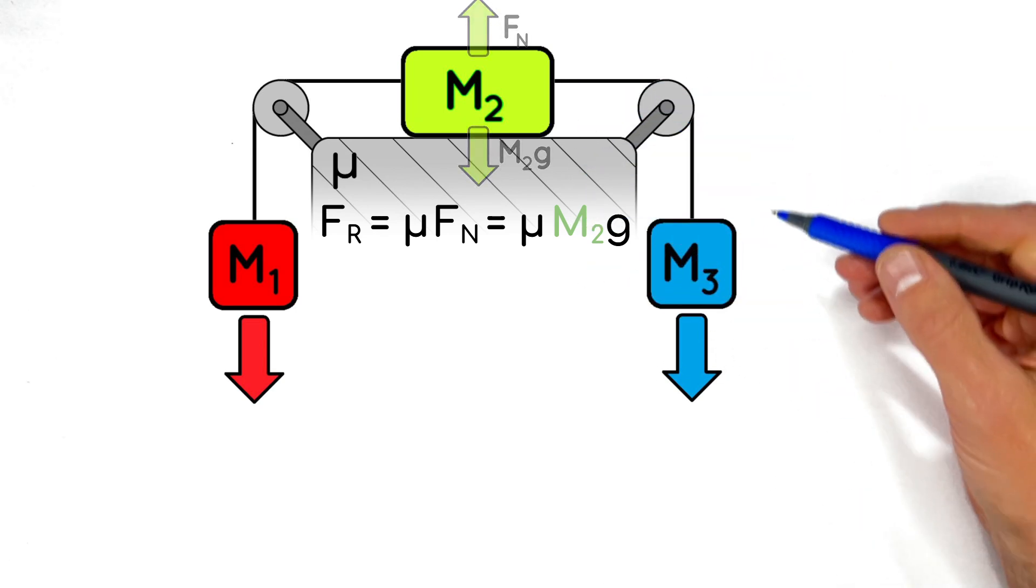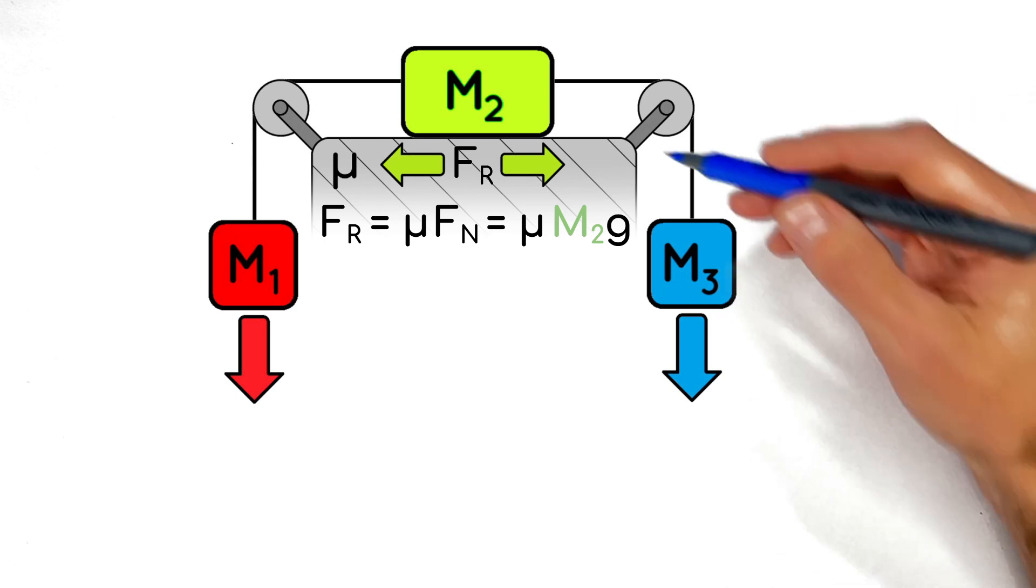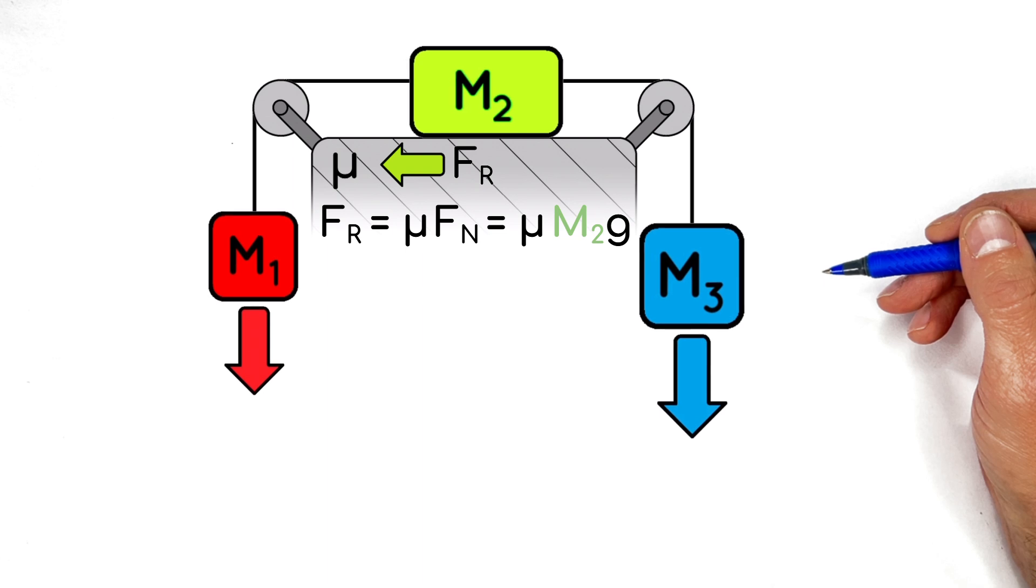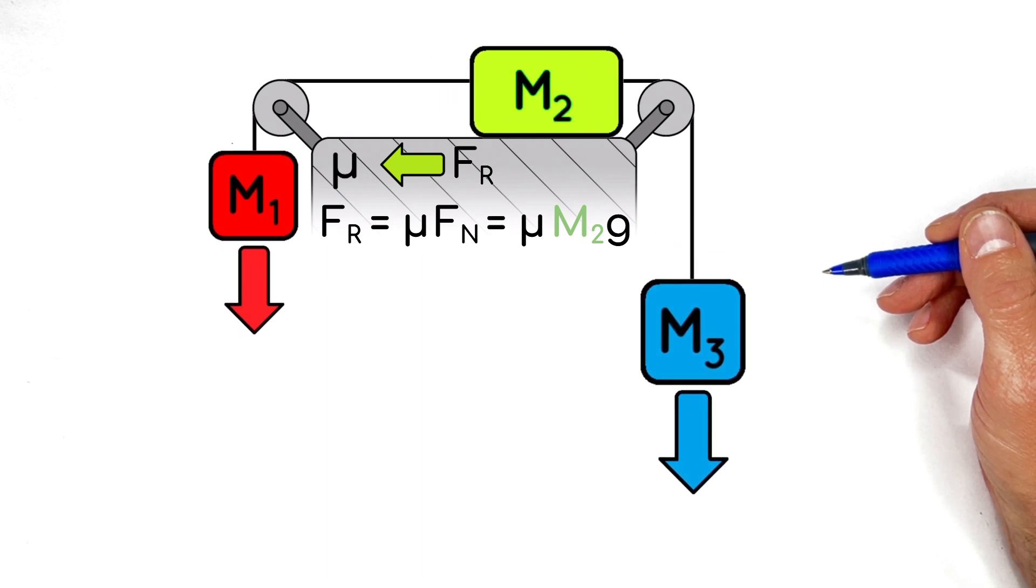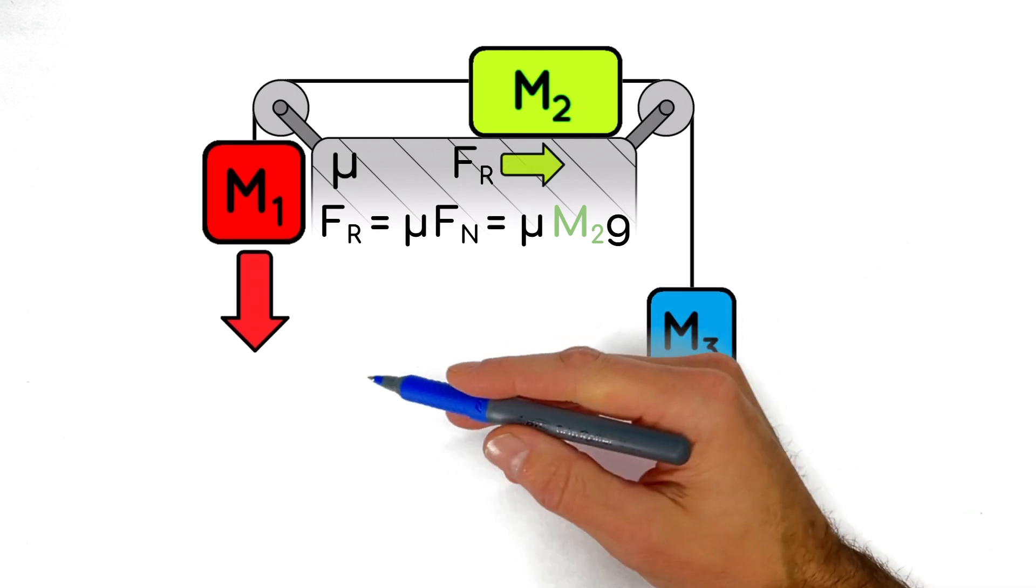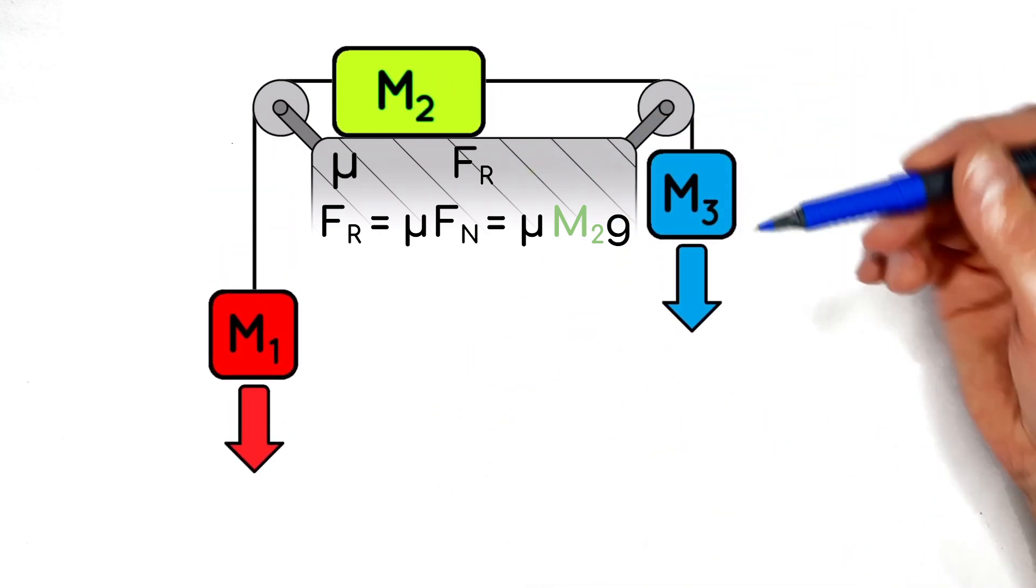And this friction term can only grow so large, it can't grow infinitely. And what that means is if we make one of these blocks heavy enough, the whole system's going to move. What we need to do here is look at whether or not the system is going to accelerate, given certain values of M1, M2, M3, and of course mu.